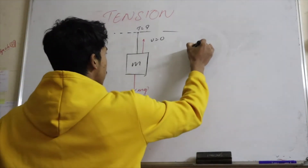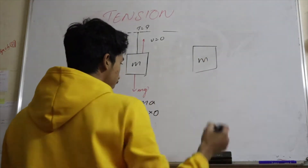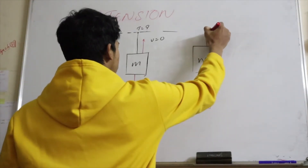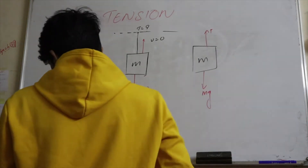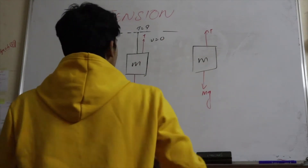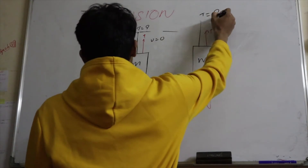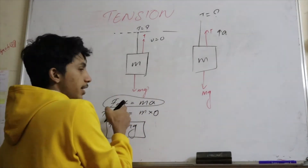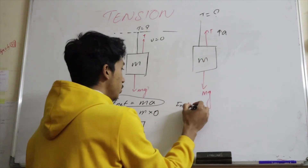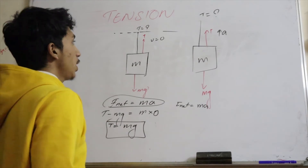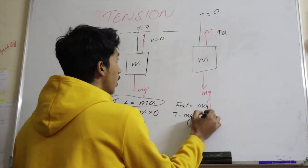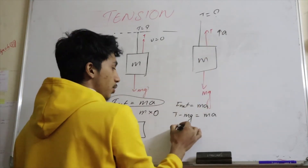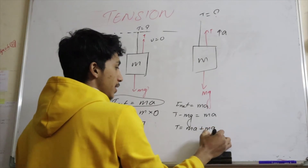The second condition: here we have the same mass, with mg acting downward and tension T acting upward, but now there is acceleration. Using the same method — F_net equals ma — the net force is tension minus mg equals ma.